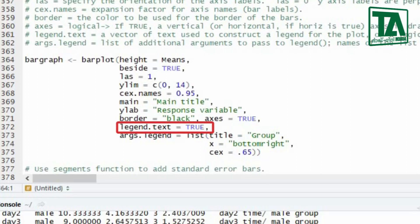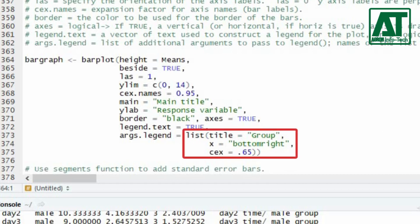Legend.text is logical indicator and specifies whether a legend should be included or not. List of additional arguments for legend can be added using args.legend argument.